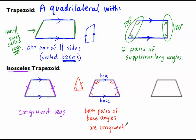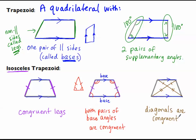One last property is about the diagonals. If I draw in the diagonals of the isosceles trapezoid, because the legs are congruent, it causes the two diagonals to be the same length. We show that with the same number of tick marks. So the diagonals are congruent. Feel free to use the congruent symbol as long as you know what it means.